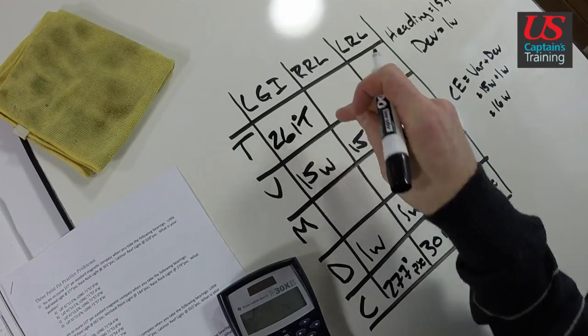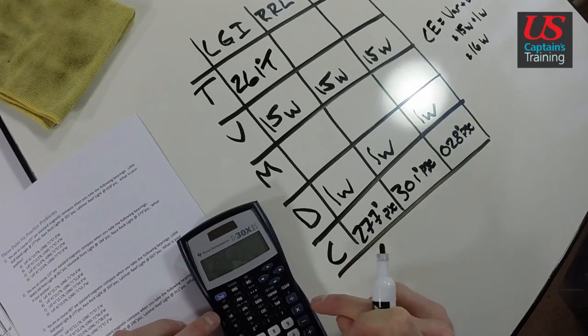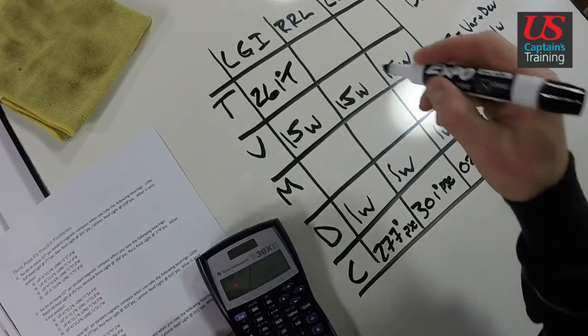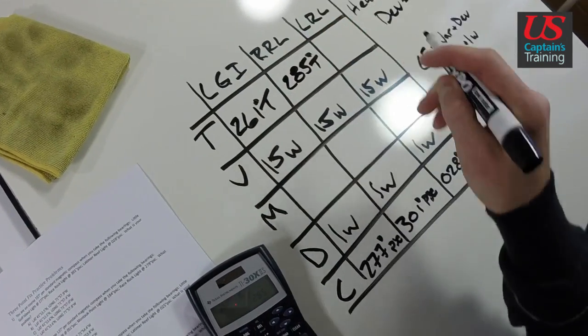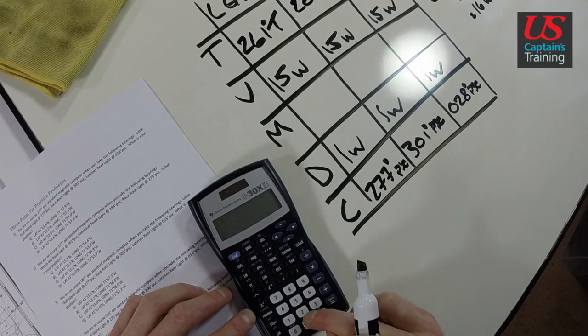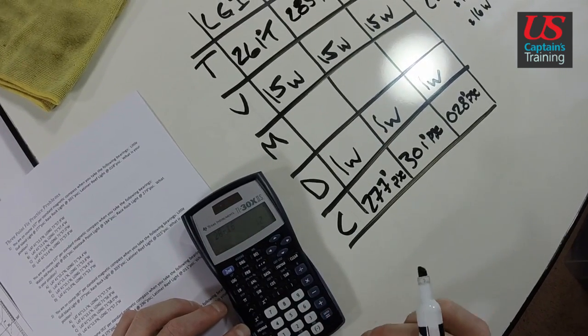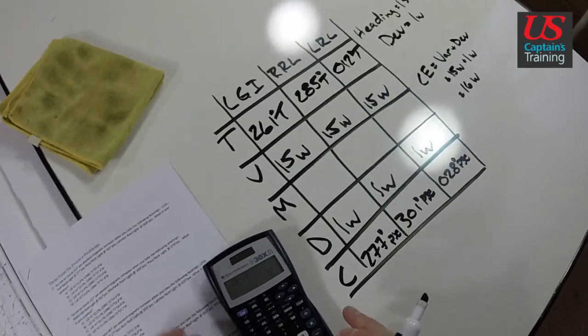301 minus 16 equals 285, 285 degrees true. 028 minus 16 equals 012, 012 degrees true. All right, now we can put these on the chart.